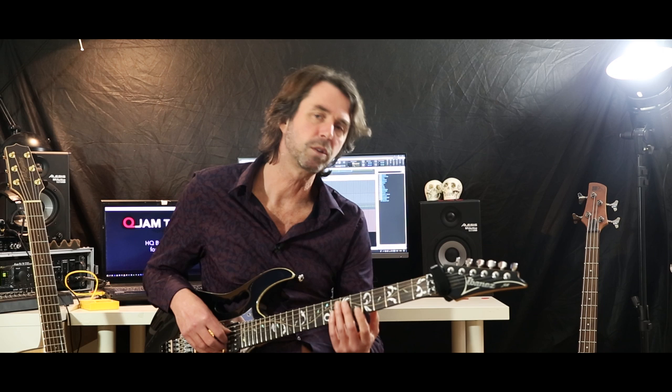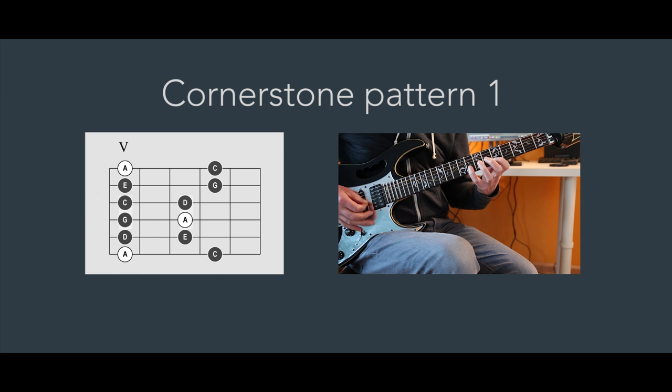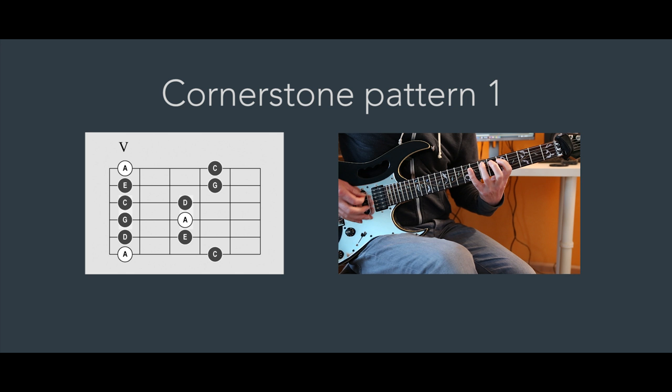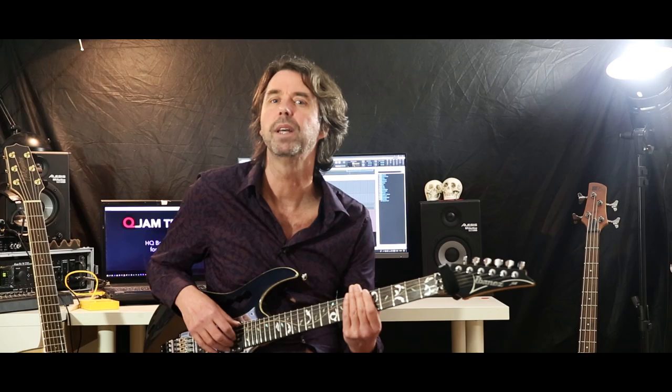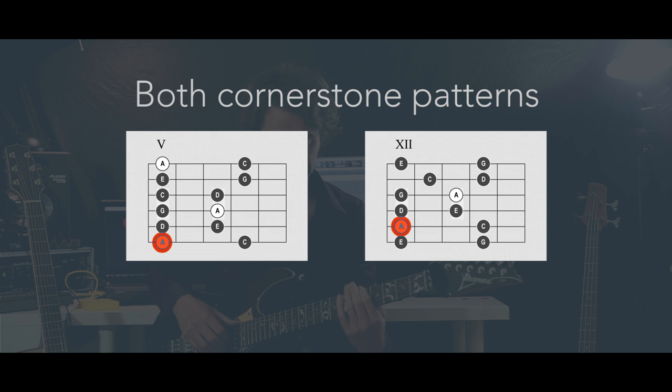The first thing you need to get familiarized with is these shapes. You can do that just by playing the shapes up and down the neck over a standard backing track — preferably a QJamtracks backing track of course. So do something like this in A minor — the first pattern is played in the fifth position and the root is A. Both are easy to play and to remember. The root is either the first note on the sixth string or the first note on the fifth string, depending on the pattern.